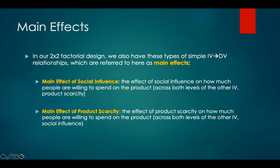In our two-by-two factorial design, we have these simple IV-to-DV relationships, which are referred to as main effects, and we have two of them. We have the main effect of social influence — the effect of social influence on how much people are willing to spend on the product, across both levels of the other IV, product scarcity — and the main effect of product scarcity — the effect of product scarcity on spending across both levels of the other IV, social influence.